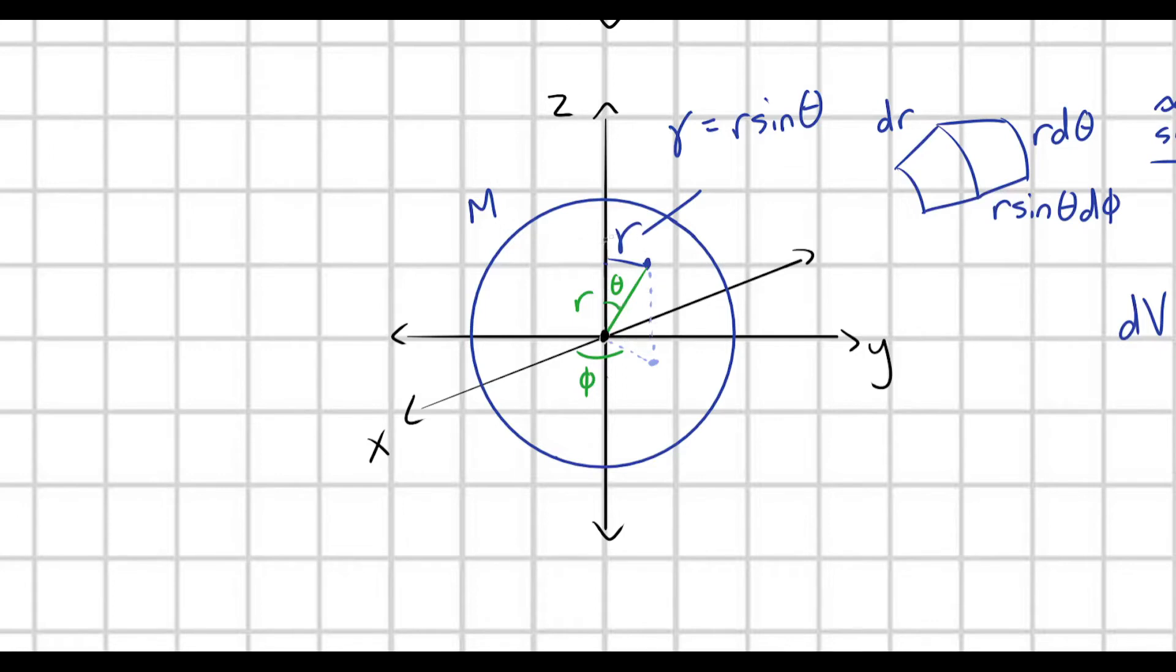And so, now theta, theta is going to vary from zero to pi. If theta starts here, we're going to move from the top of the sphere down to the bottom of the sphere, kind of like this, by ranging theta from zero to pi.